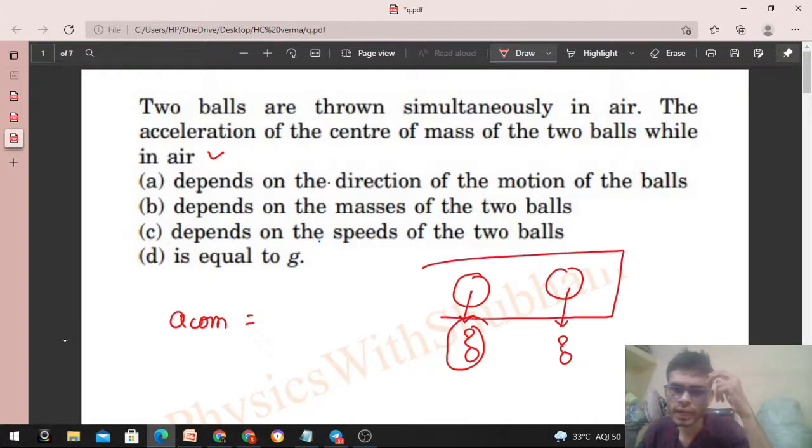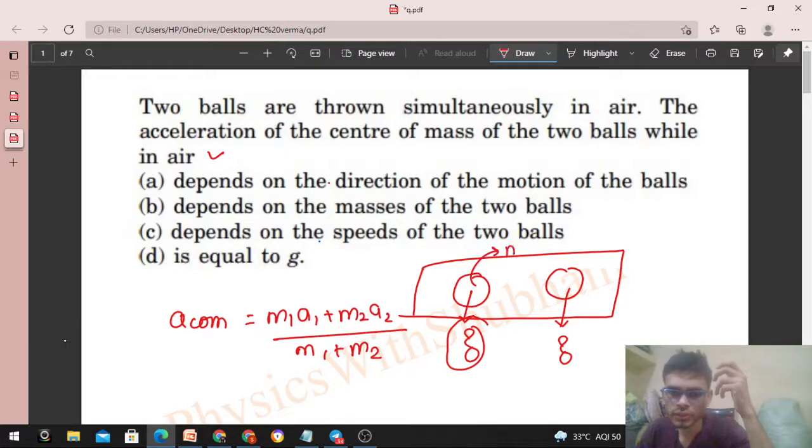And what is the acceleration of center of mass of the system of two balls? If our system has two balls, then acceleration of center of mass will be m1·a1 plus m2·a2 upon m1 plus m2. What is m1 and m2? m1 is the mass of the first ball and m2 is the mass of the second ball.